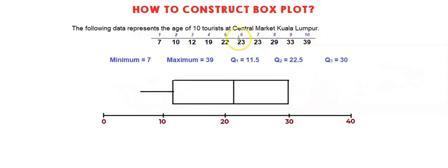For the whisker on the right-hand side, draw another horizontal line from the vertical line of Q3 until the maximum value. So maximum value is 39. Now we get a complete box plot.